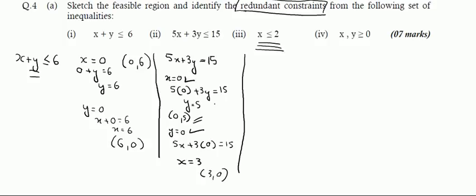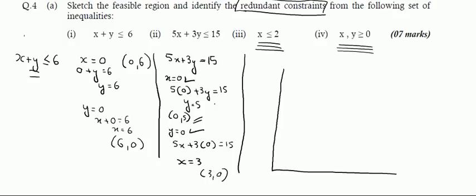x less than or equal to 2 is a straight line parallel to the y-axis. The last two are non-negativity constraints, as already discussed in previous videos. So our two lines have points: (0, 6) and (6, 0) for the first line, and (0, 5) and (3, 0) for the second.